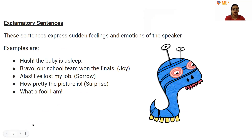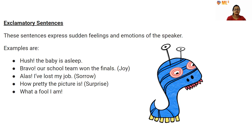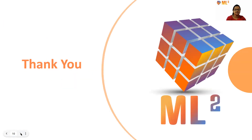Exclamatory sentences express sudden feelings and strong emotions of the speaker. Examples include: 'Hush, the baby is asleep,' 'Bravo, our school team won the finals,' 'Alas, I have lost my job,' 'How pretty the picture is,' and 'What a fool I am.' These sentences use an exclamation mark and convey emotions like sudden joy or surprise.